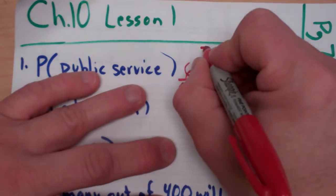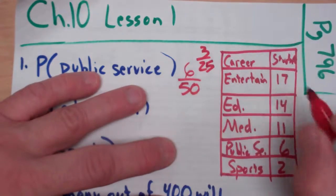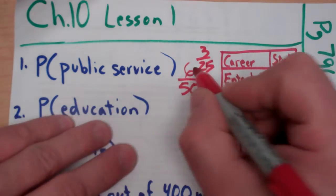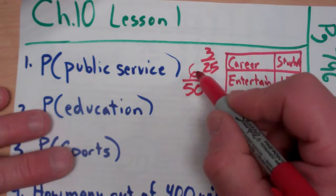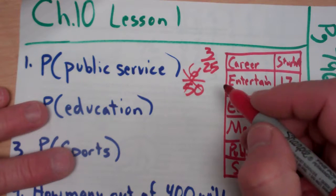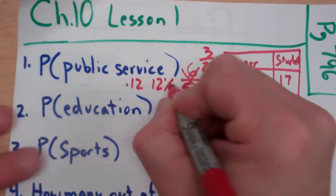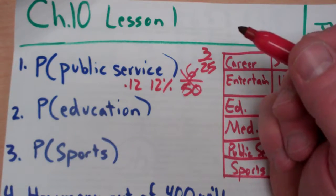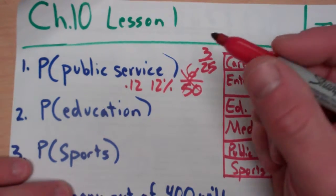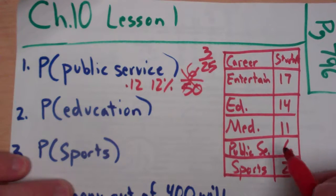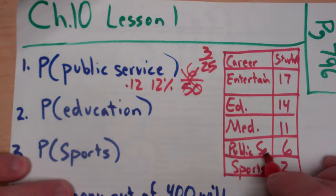I would simplify that down to 3 out of 25. There's a 3 out of 25 chance. You could write that as a fraction, as a decimal or percent. You could divide that, which is going to get you 0.12. You could move it two places. That would be a 12% chance that you're going to get somebody randomly that is interested in public service.